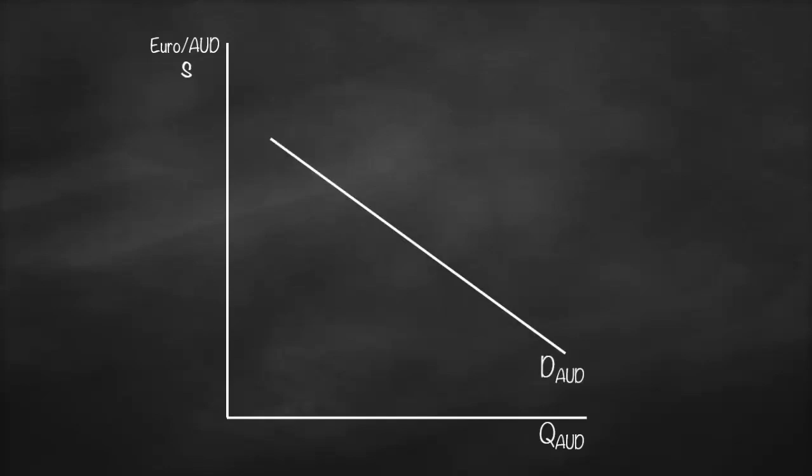This is our demand curve for the Australian dollar which is downward sloping, and this is our supply curve for the Australian dollar which is upward sloping. The point of intersection will give us our equilibrium point, and this will give us our equilibrium quantity or equilibrium amount of Australian dollar and the equilibrium exchange rate.